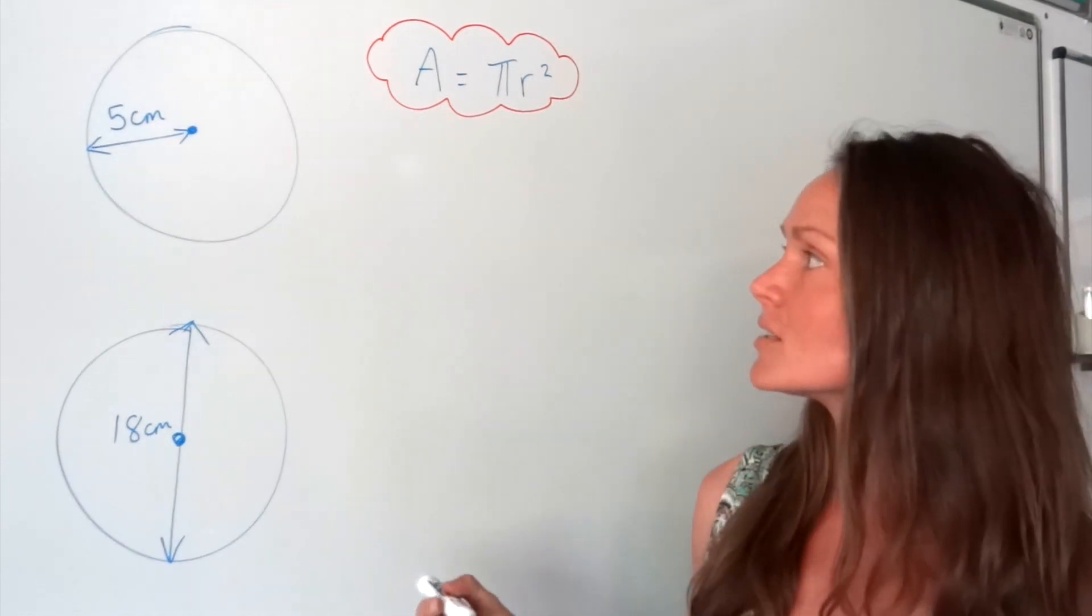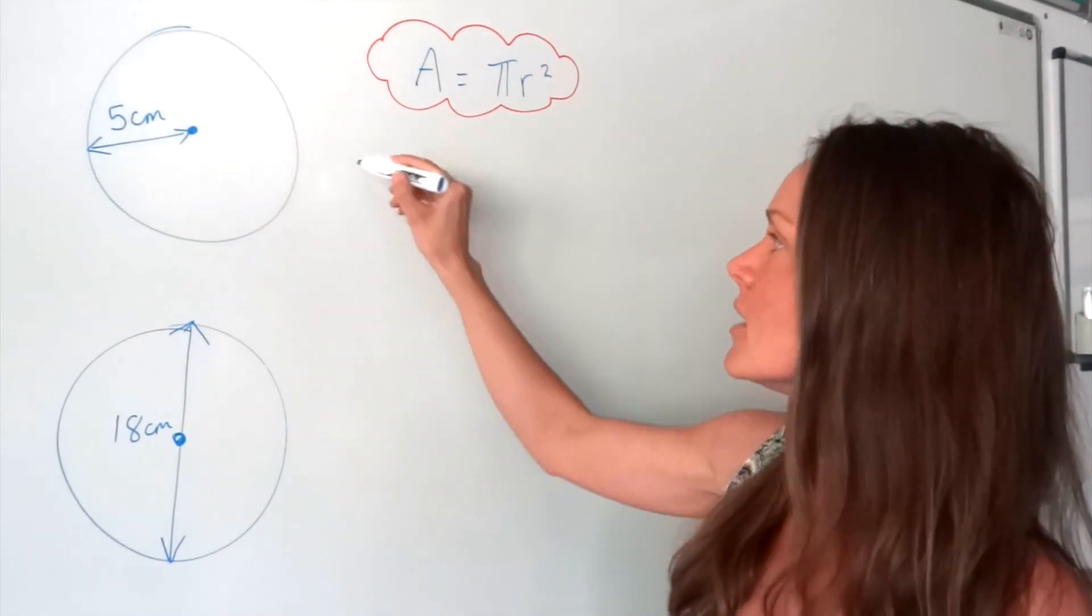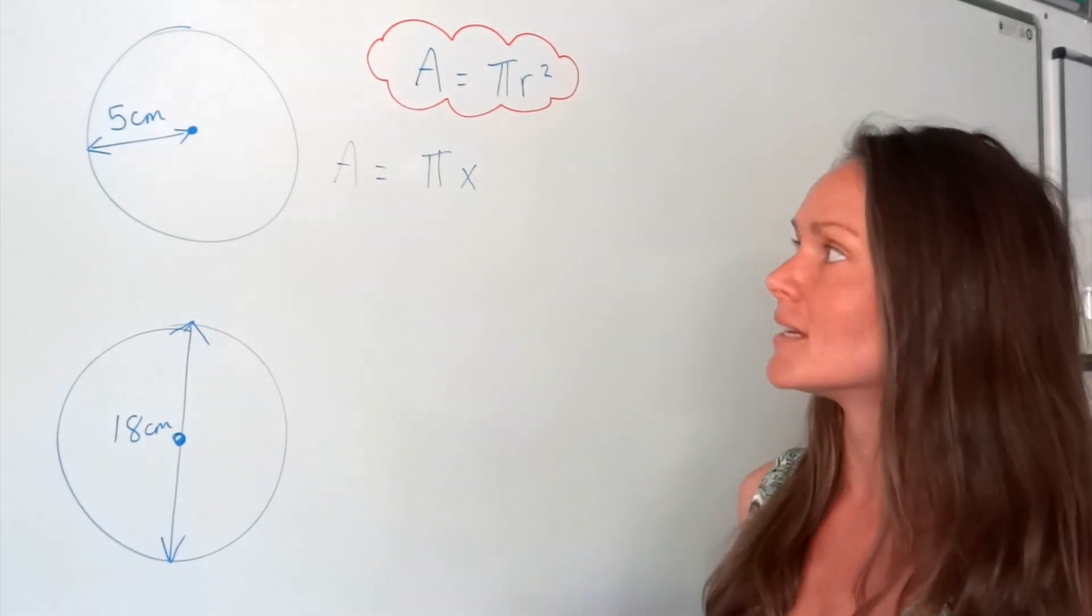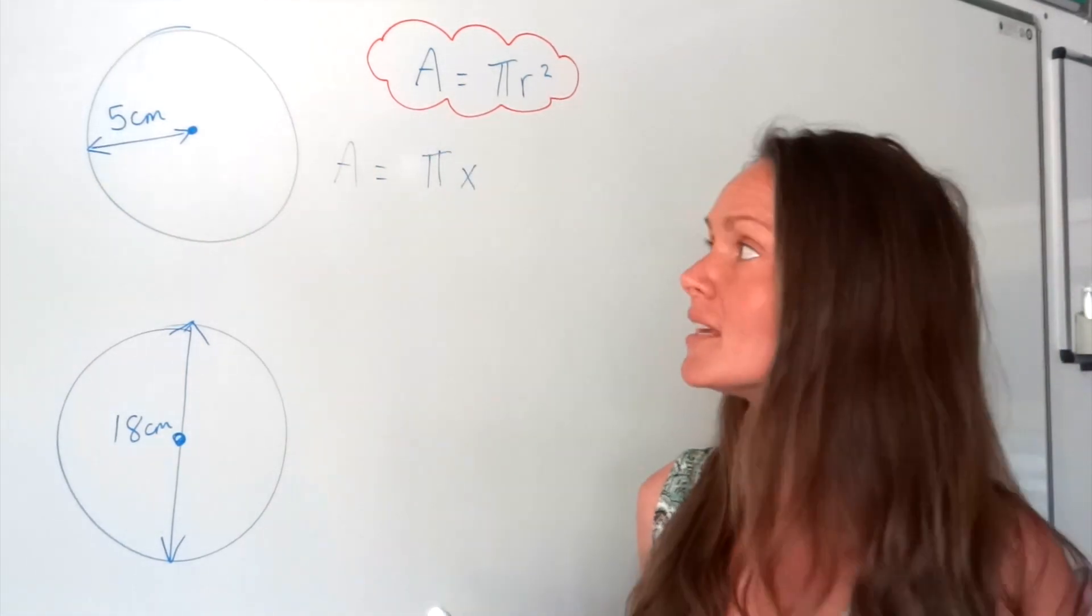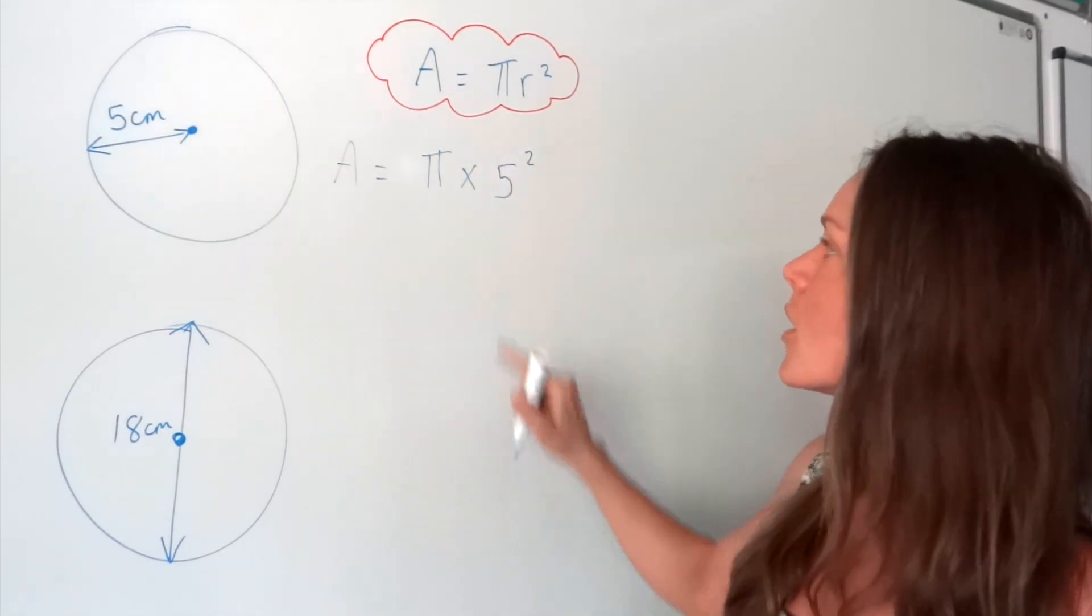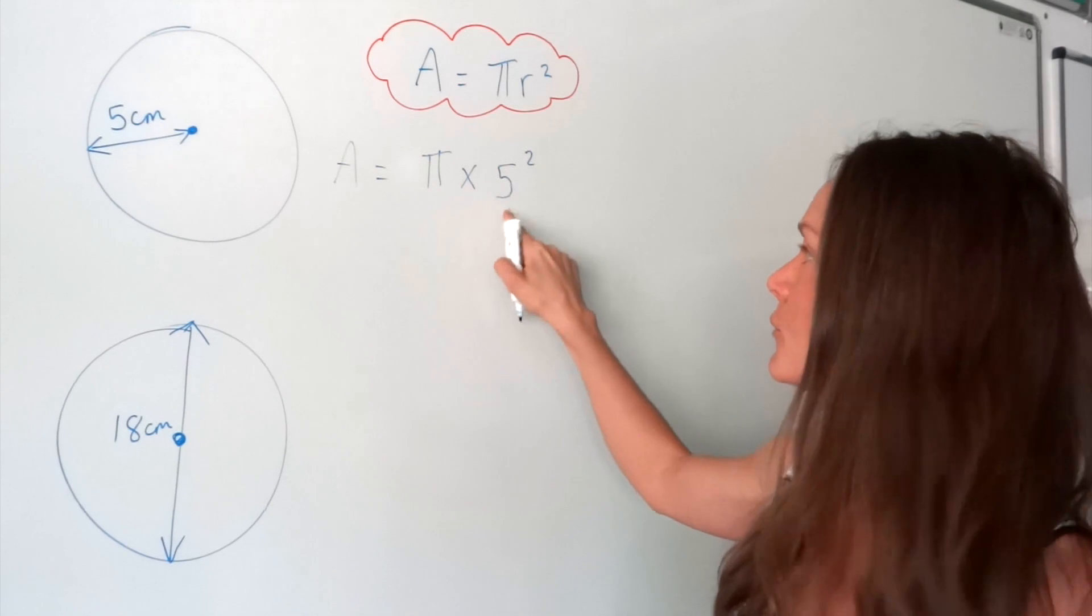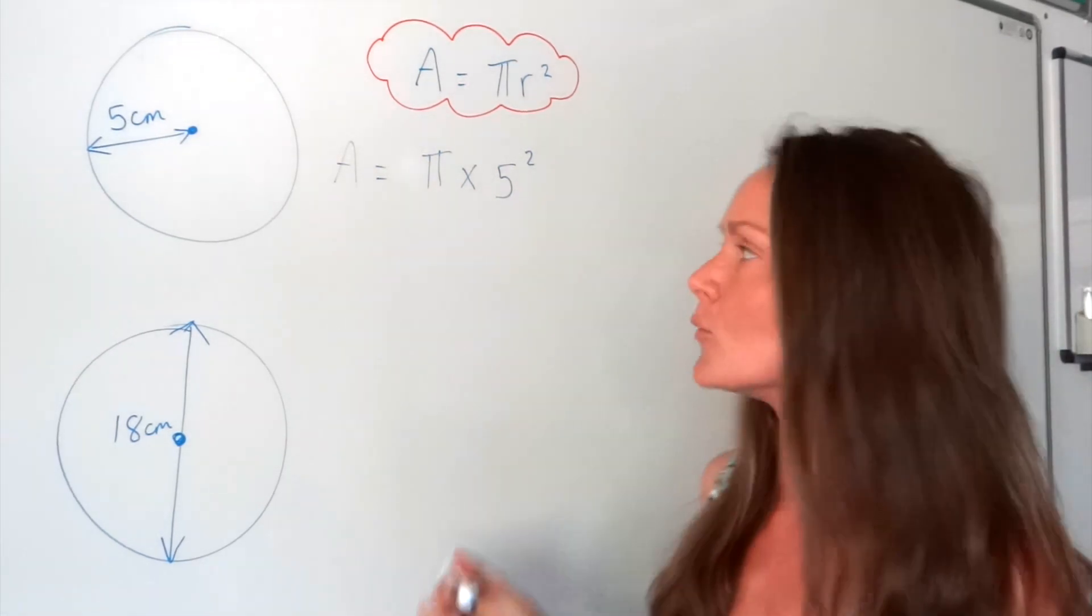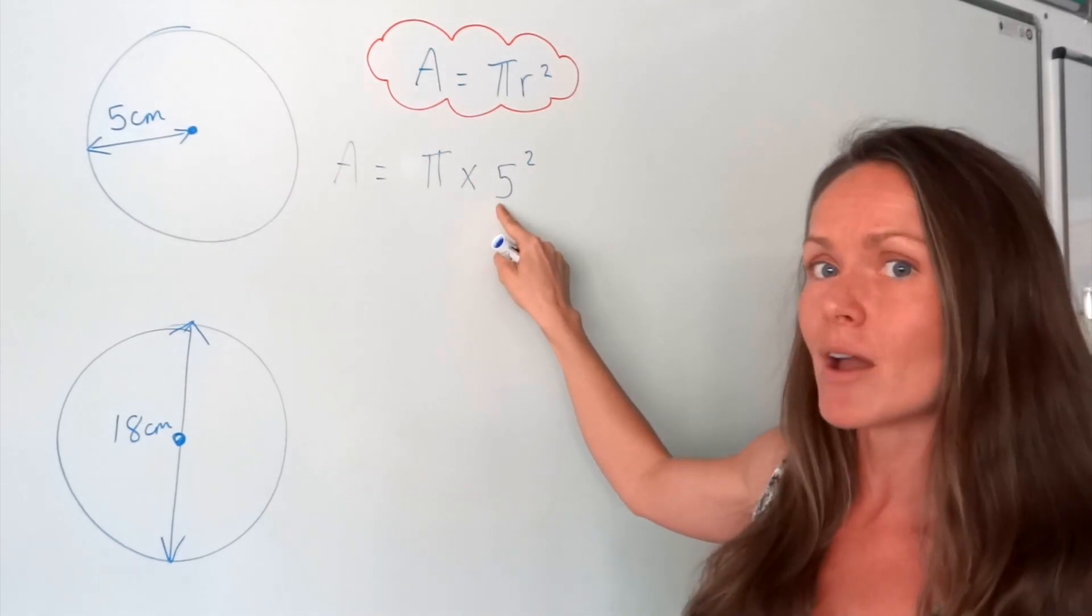So in my first example, to work out the area, I have to multiply pi by the radius squared. And in this one, the radius is already given to us, it's 5. So you just multiply pi by 5 squared. Remember, squared just means multiplying by itself. So this is just 5 times 5, this part here.